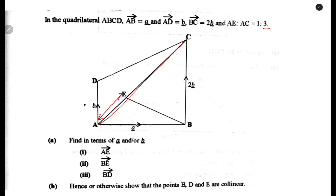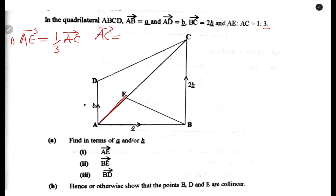Now let us start answering the question. The first one is to find AE in terms of a and b. To find vector AE, we are going to find 1 over 3 of AC. We do not have AC directly, but we can find it. AC is equals to AB then plus BC, moving from A to C through B.